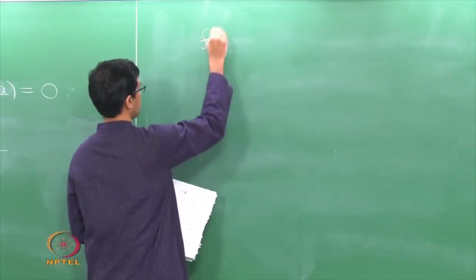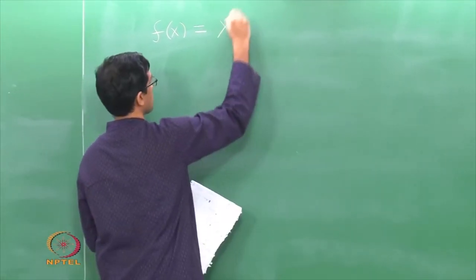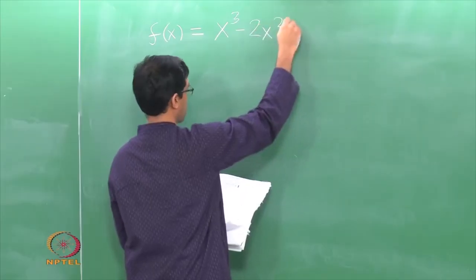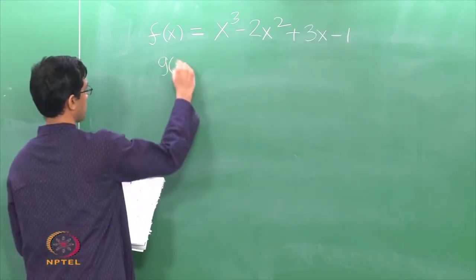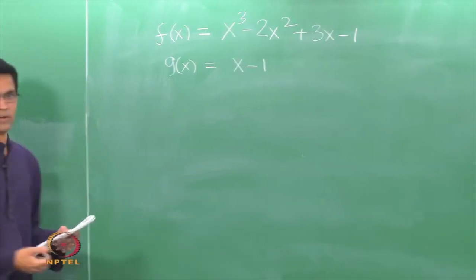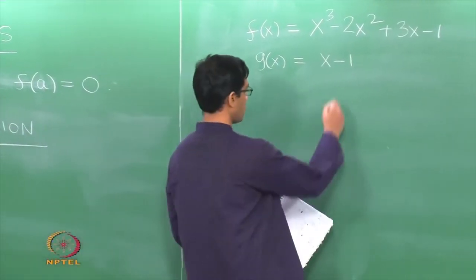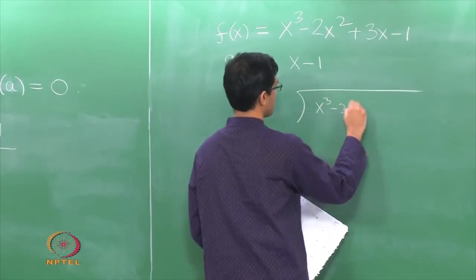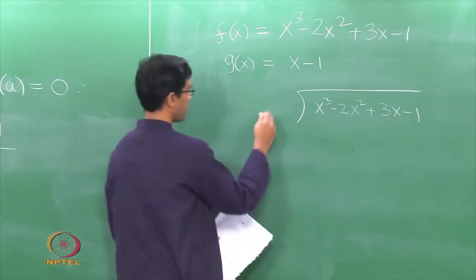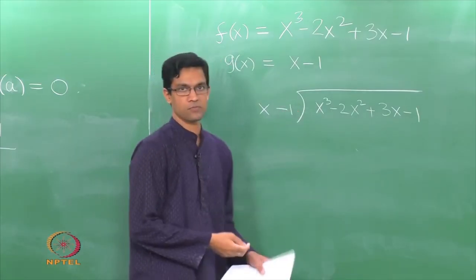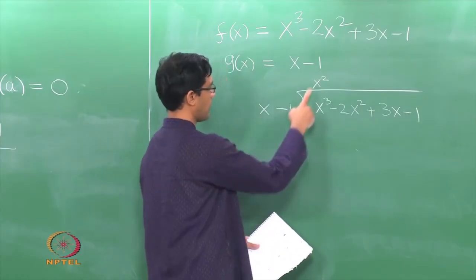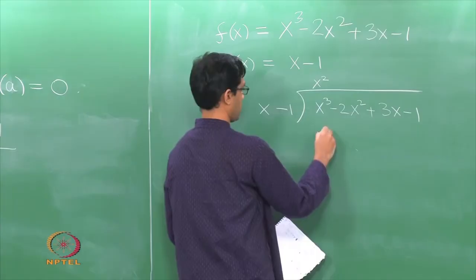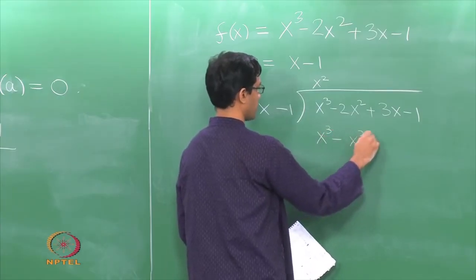Let us perform long division of the polynomial F of X. I am going to divide F by G, perform the long division procedure. We write F of X first: X cube minus 2X square plus 3X minus 1, and we want to divide it by the polynomial X minus 1. The algorithm says: first divide the highest power here by the highest power here, so X cube divided by X gives a quotient of X square. We write that on top and multiply X square by X minus 1, which gives X cube minus X square, and then we subtract.